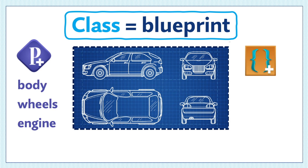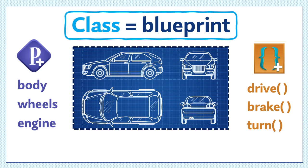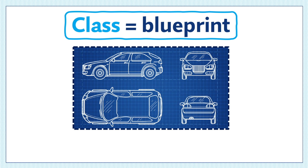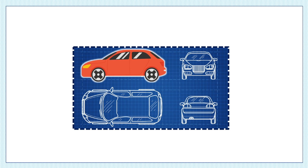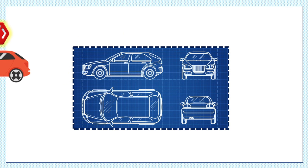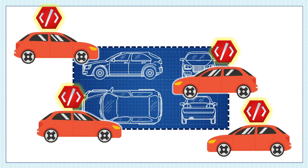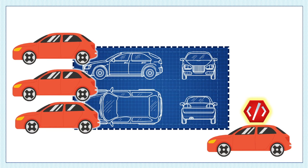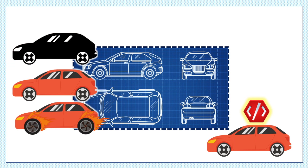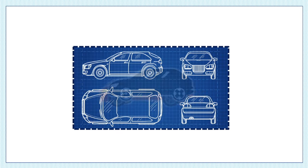Think about a blueprint for a car. The blueprint will tell you what a car has — a body, wheels, engine — and what a car does, like drive, brake, and turn. But the blueprint itself is not a car; it's just the definition of one. Take the class blueprint and use it to build a car, and now you have an object. You can use the blueprint to make many more objects — each one will look and behave the same. Once the objects are created, you can modify each one without changing the rest, which is why you can paint your car without changing your neighbor's. In other words, an object is just the actual representation of a class.